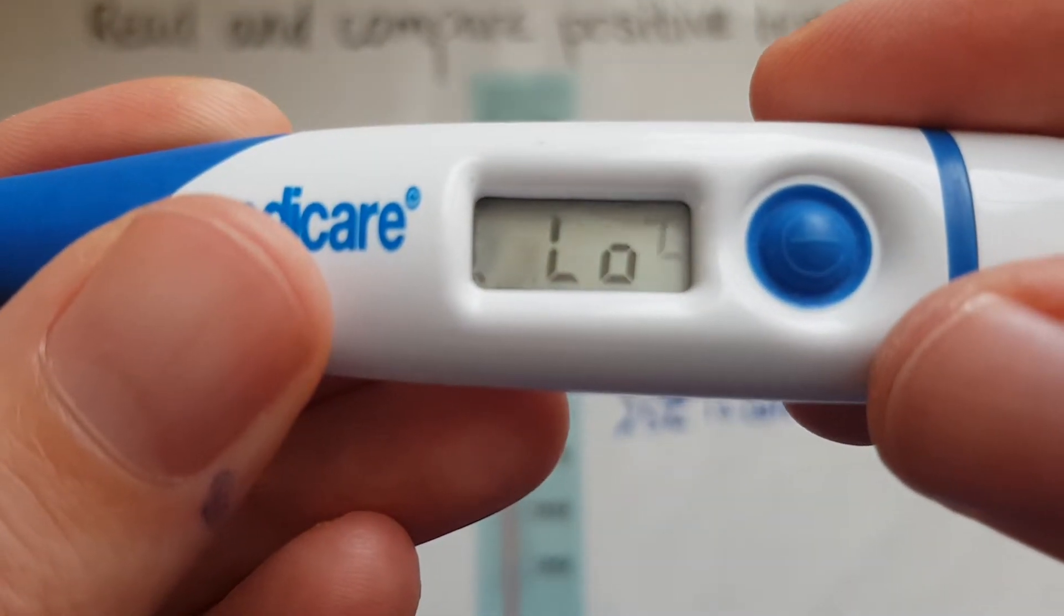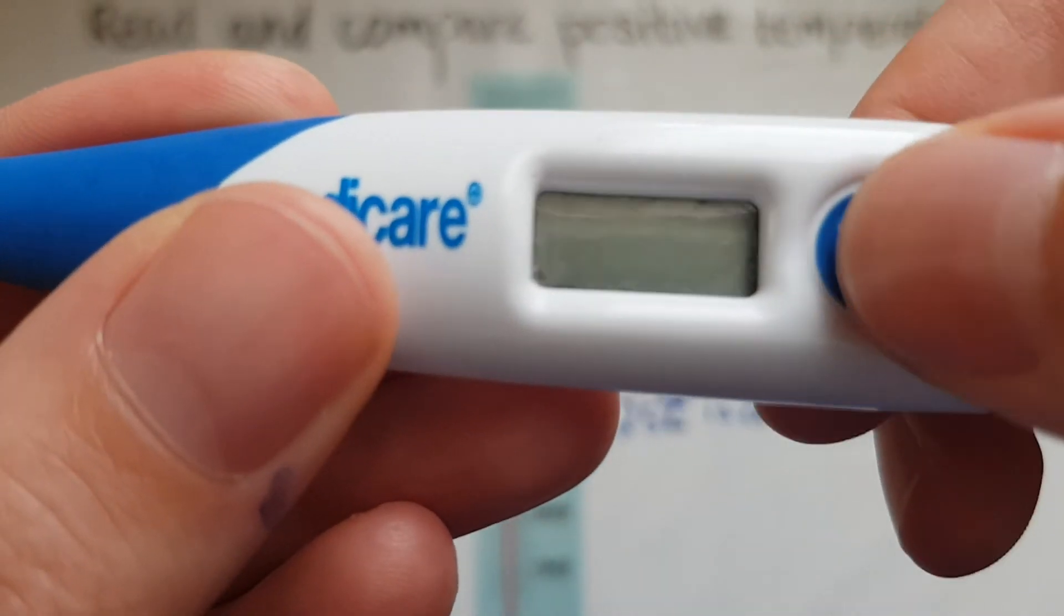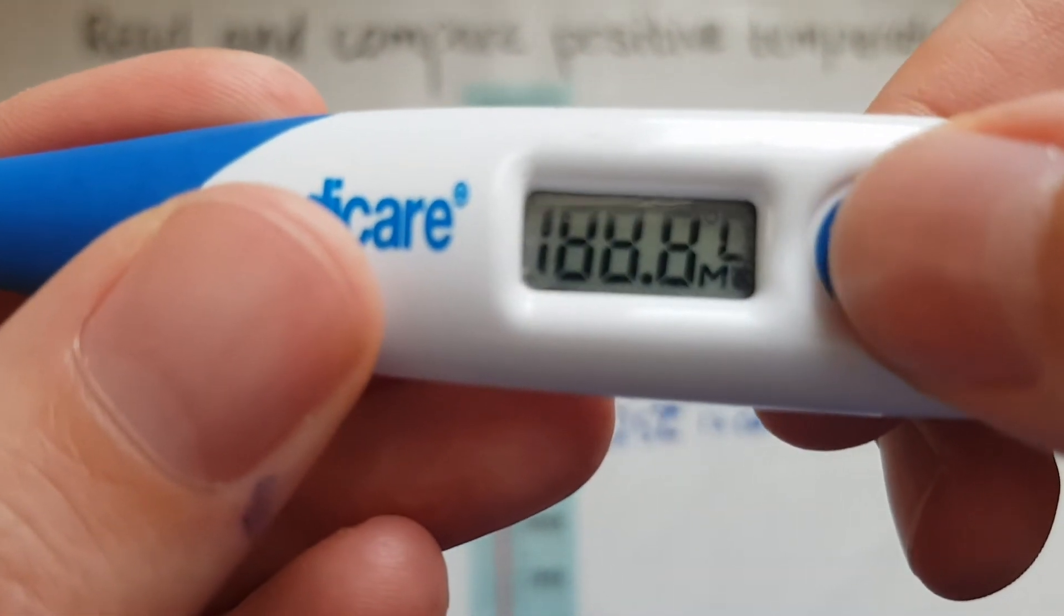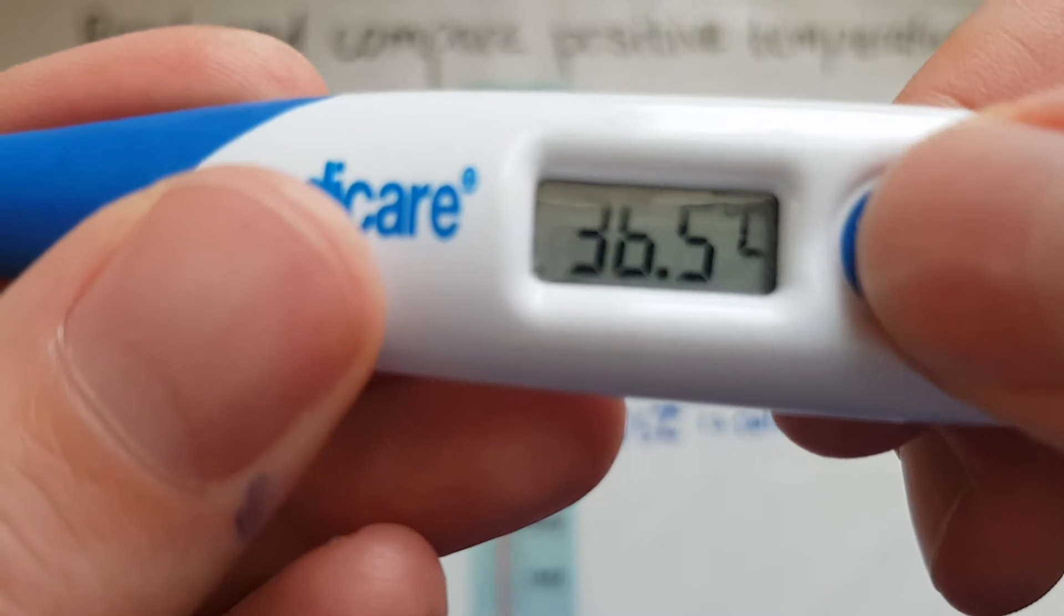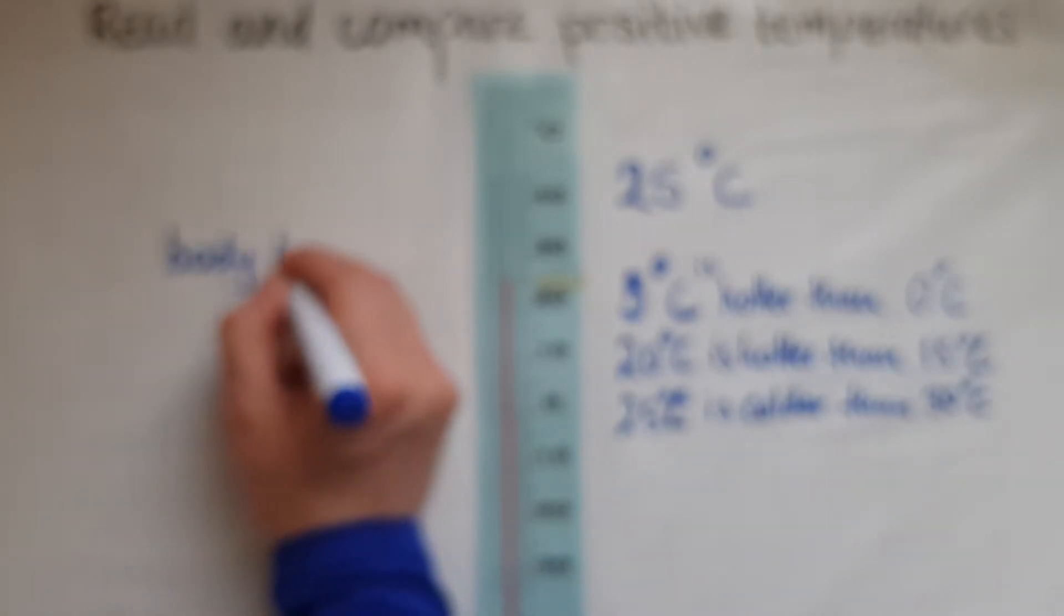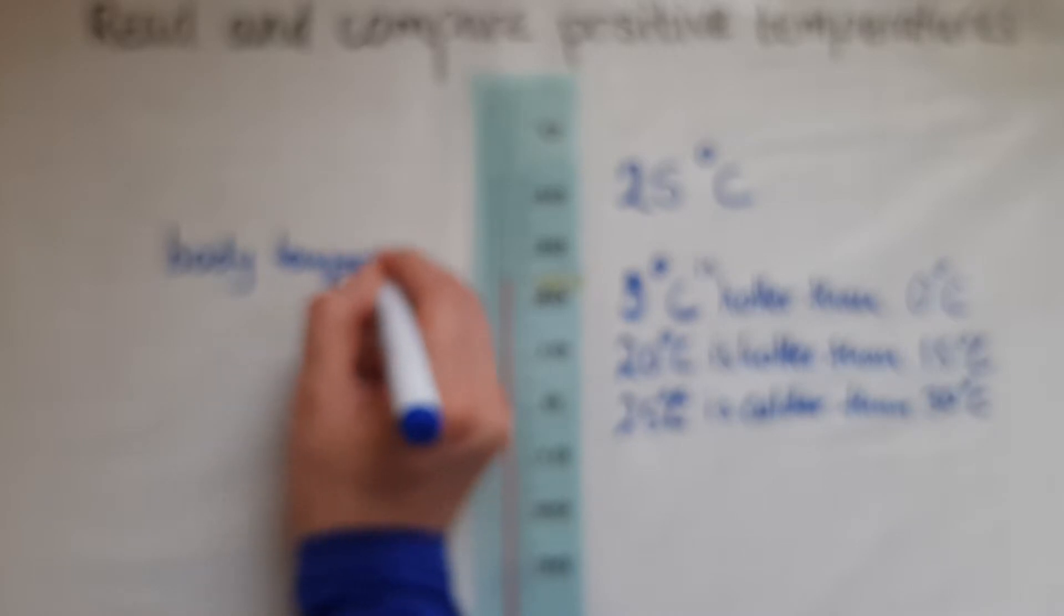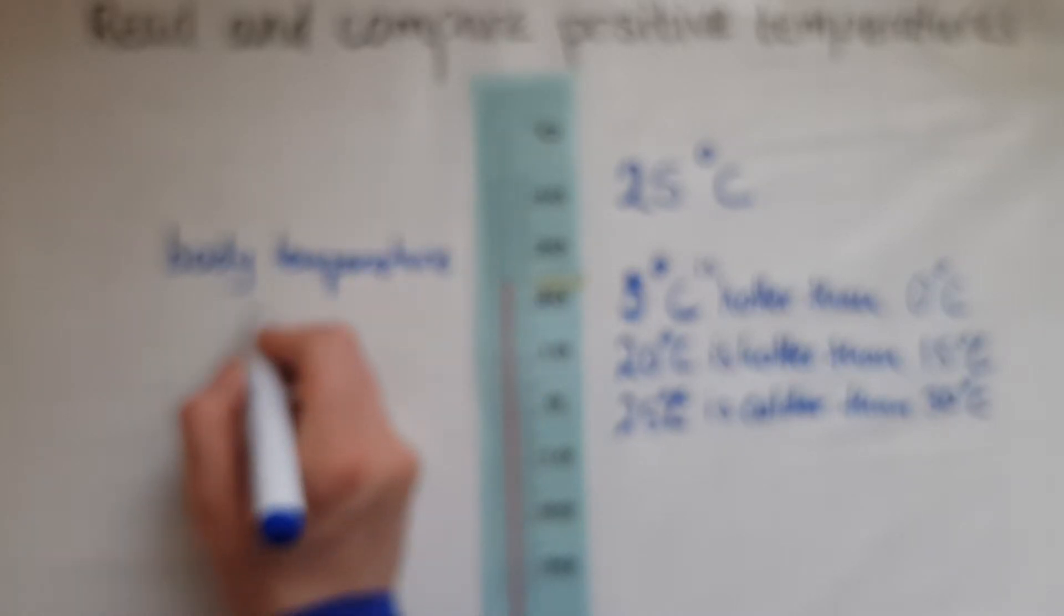This is currently 36.5. I'll show that once more. 36.5. So it's around 36 degrees, the body temperature. About 36 degrees it should be.